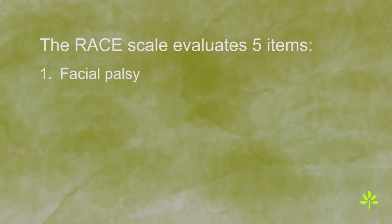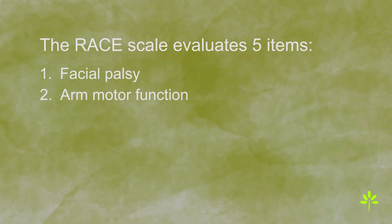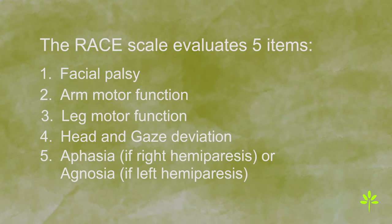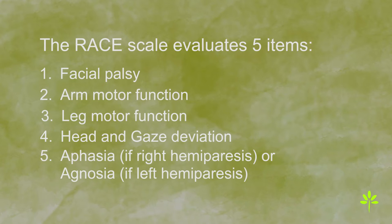The five items are: 1. Facial palsy. 2. Arm motor function. 3. Leg motor function. 4. Head and gaze deviation. 5. Aphasia, which must be evaluated if the patient has right hemiparesis or no motor impairment; or agnosia, which must be evaluated if the patient has left hemiparesis.